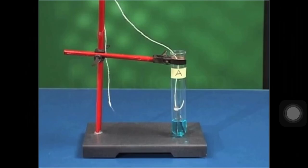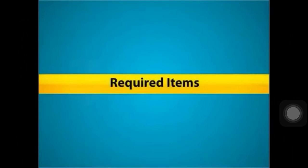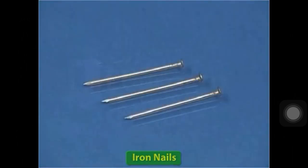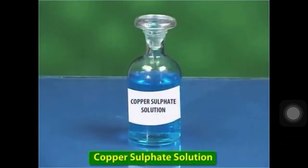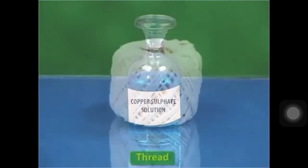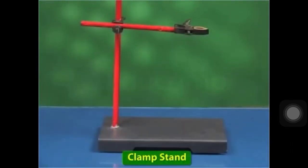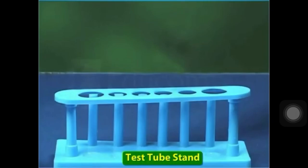Let us perform an activity to find out the details of this color change. For this activity, you will require iron nails, sandpaper, test tubes, copper sulfate solution, thread, clamp stand and test tube stand.